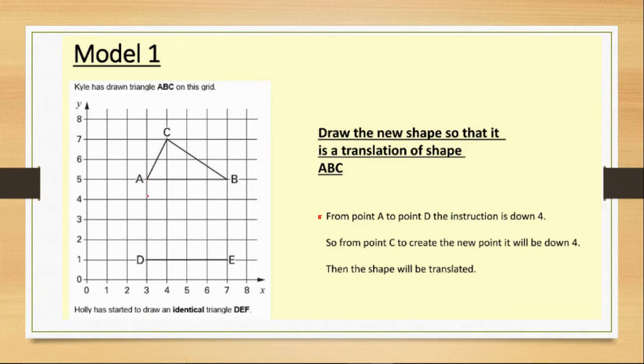So it's gone 1, 2, 3, 4. Similarly, with B to E, it has gone 1, 2, 3, 4. Down 4 or 4 down.